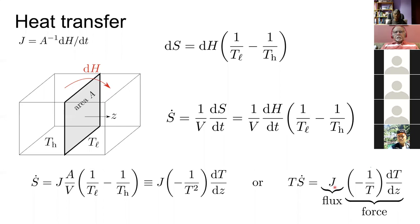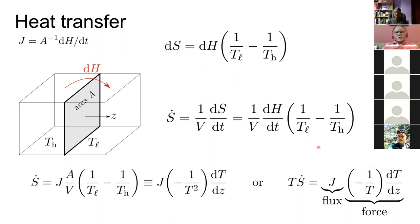Looking at heat transfer as a second example: I have two chambers at different temperatures T_H and T_L with area A, and we are transferring a quantity of heat dH into one side. From an earlier lecture you know that the entropy change on doing this transfer is 1/T_L minus 1/T_H. We have actually produced entropy because T_H is larger than T_L, so 1/T_H is smaller. The rate of entropy production is dS/dt, and this is per unit volume.